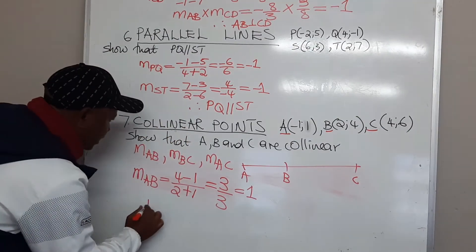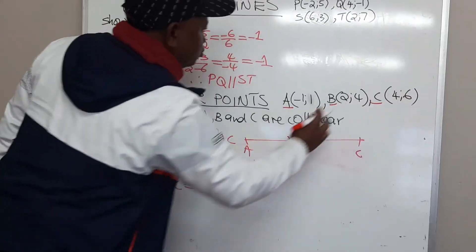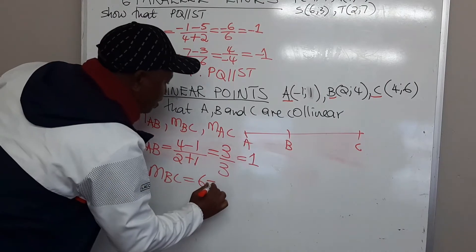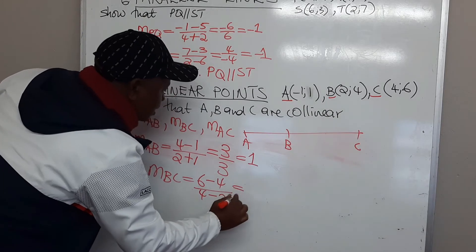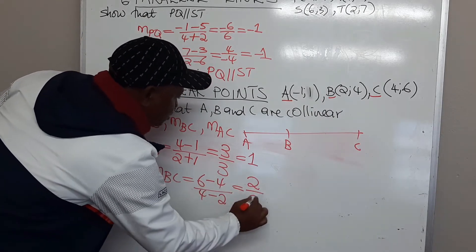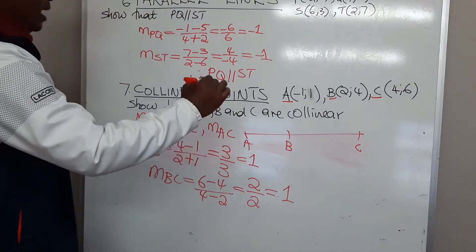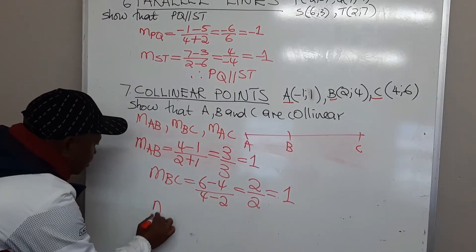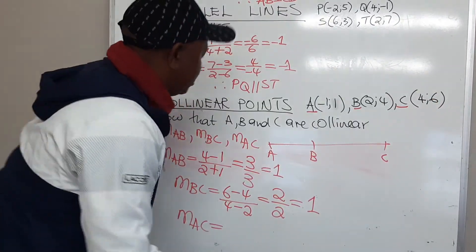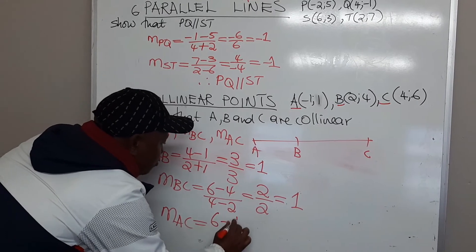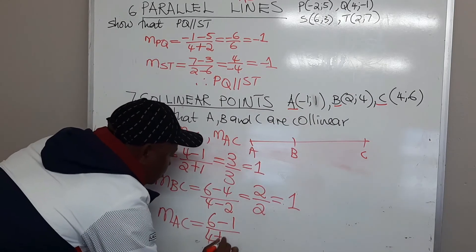I then go to the gradient of BC: y2 is 6 minus y1 which is 4, over x2 is 4 minus x1 which is 2. Therefore, 6 minus 4 is 2, 4 minus 2 is 2, and 2 over 2 gives 1. We still have the same gradient. Lastly, the gradient of AC: y2 is 6 minus y1 is 1, over 4 minus negative 1 which is going to be positive.